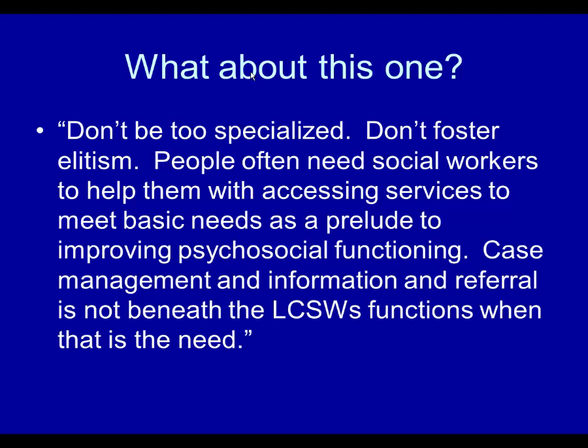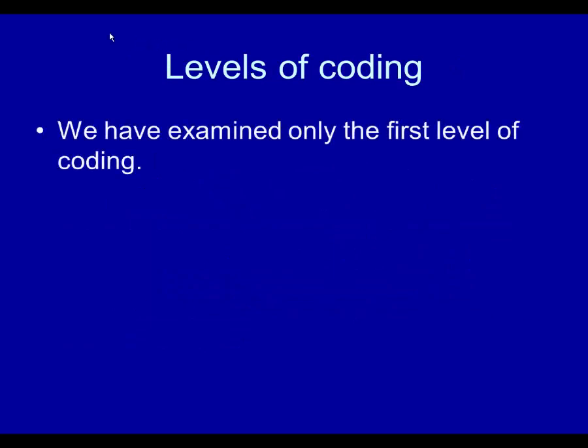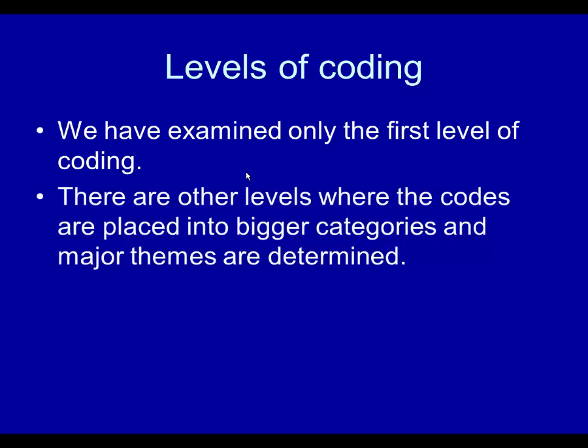For the third example, I would say this has to do with generalist practice. In social work, we sometimes refer to practice as either generalist or specialized. This statement focuses on generalist practice — the advice is to make sure you prepare people for generalist practice, not just specialized practice. One final point: there are levels of coding. We have examined only the first level of coding — coming up with the initial way of capturing the essence of each statement.